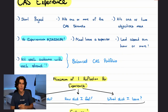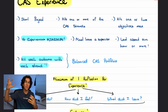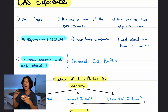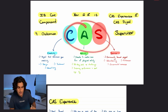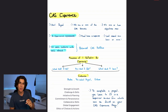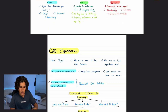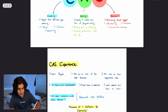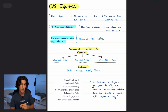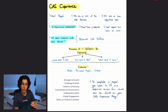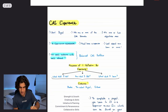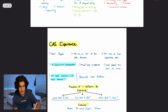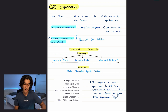A CAS portfolio sounds fancy but it's really just the accumulation of all your experiences and your one CAS project. It's important to have experiences covering all three strands and demonstrating all seven objectives. To achieve balance you need a creative experience, an activity experience, and a service experience each linking to all seven objectives — that would be 21 experiences in total, but since you can combine strands in one experience, 16 experiences is the minimum.